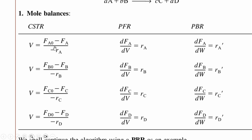For CSTR, PFR, and PBR, we say V = (FA0 - FA)/(-rA), dFA/dV = rB, dFA/dW = rA'.